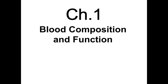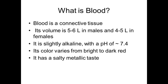This topic is on blood composition and function. Blood is a connective tissue. Its volume is 5 to 6 liters in males and 4 to 5 liters in females. It is slightly alkaline with a pH of 7.4. Its color varies from bright to dark red depending upon the concentration of iron.